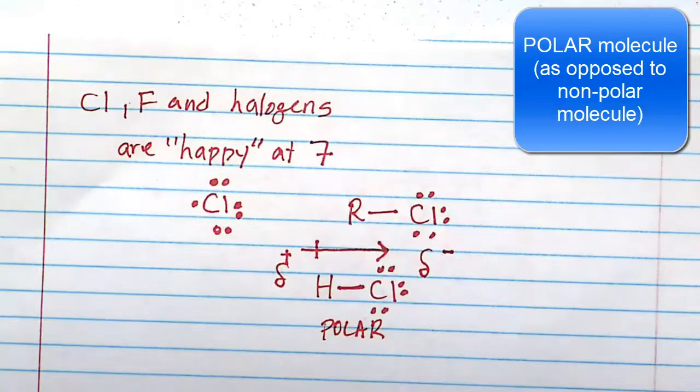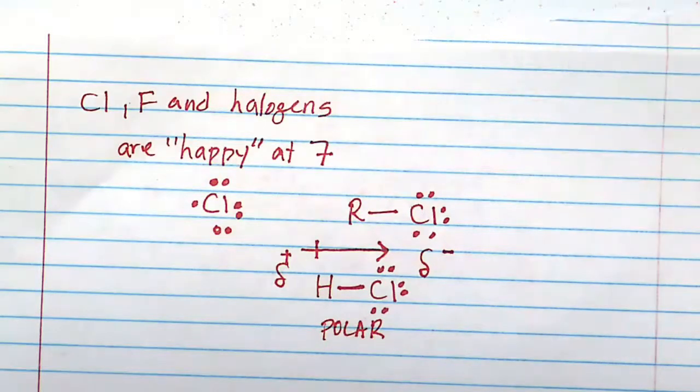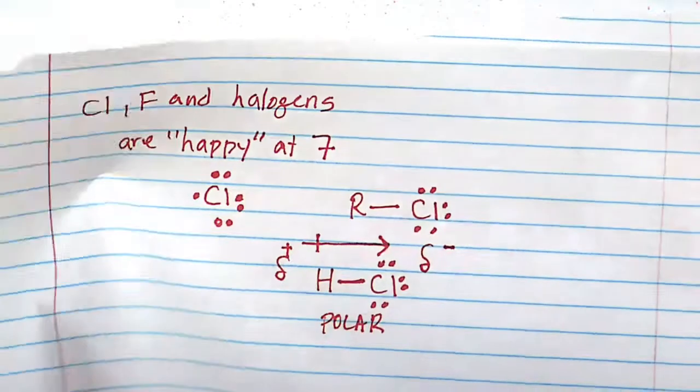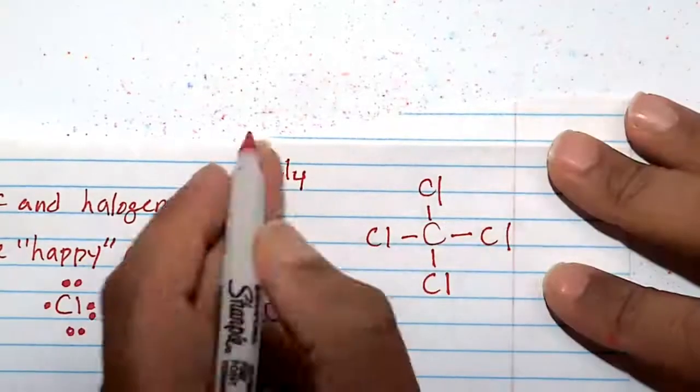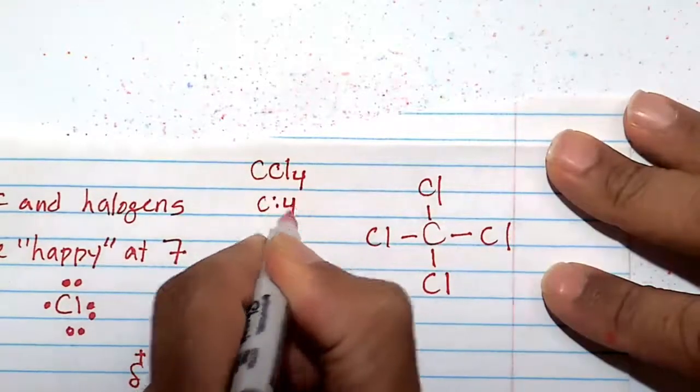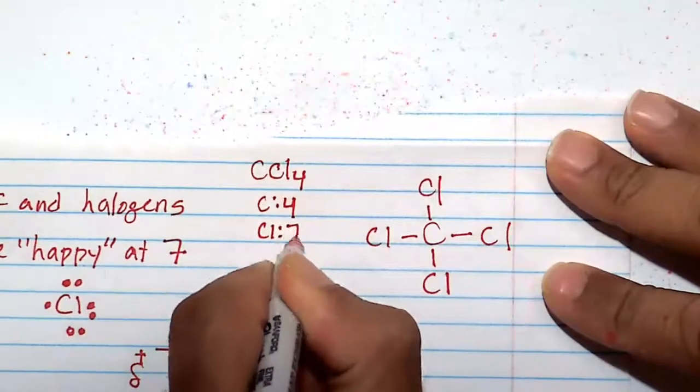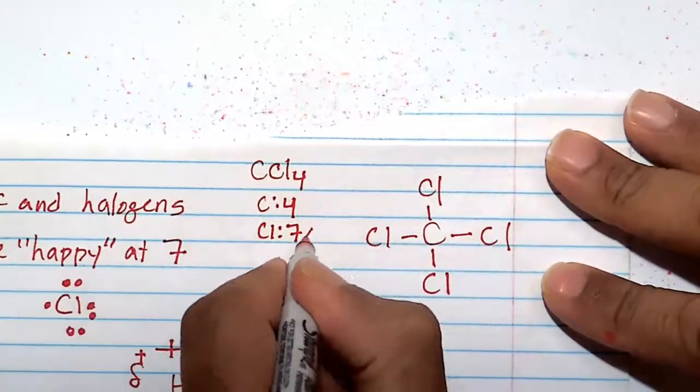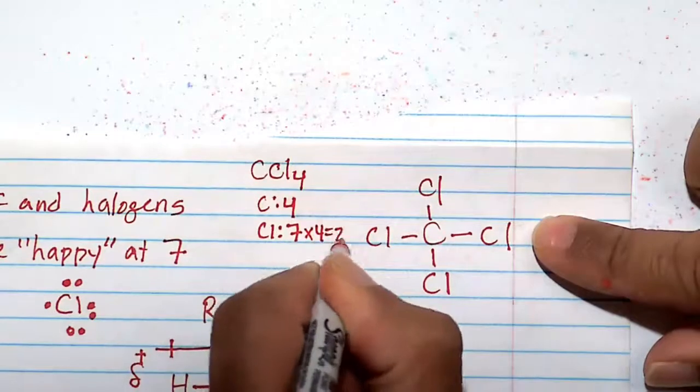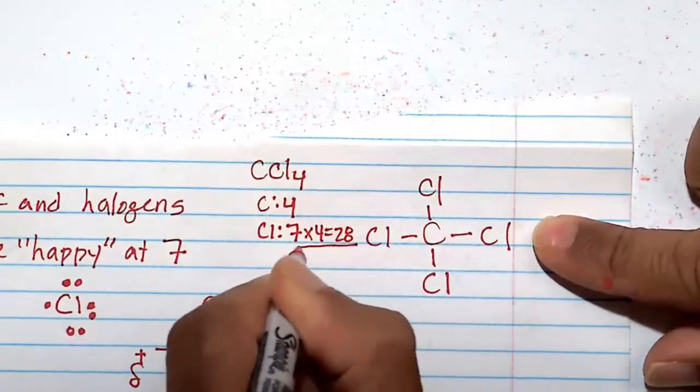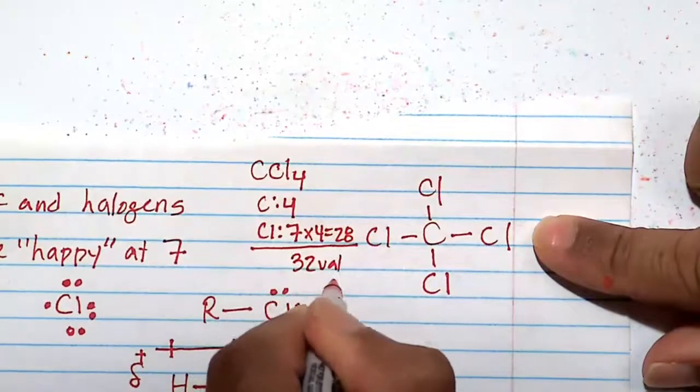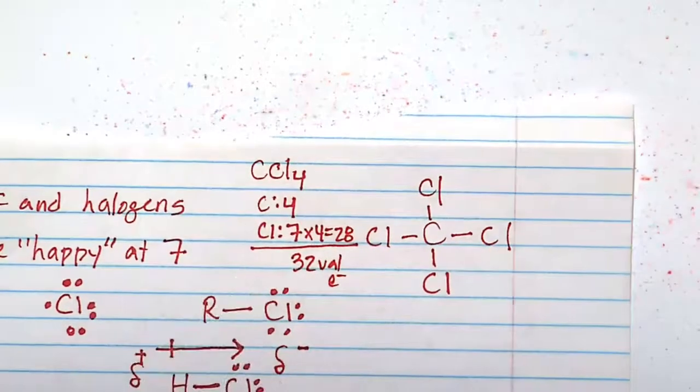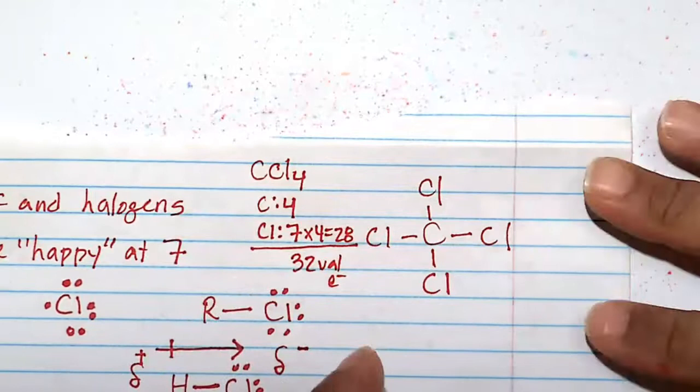Now, if there's some sort of internal symmetry within the molecule, then it becomes nonpolar. As an example, we'll look at CCl4. All right, so CCl4 is the covalent structure here. Just briefly, carbon is happy at 4. Chlorine, as all the halogens are happy at 7. But we have 4 chlorines there. So that gives us 28. So we have to put in 32 valence electrons around the CCl4 molecule.